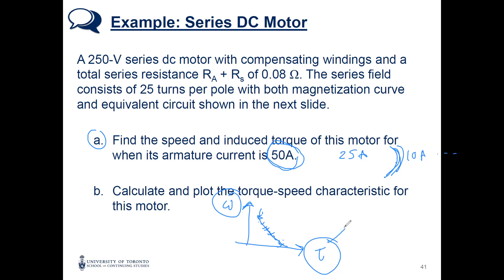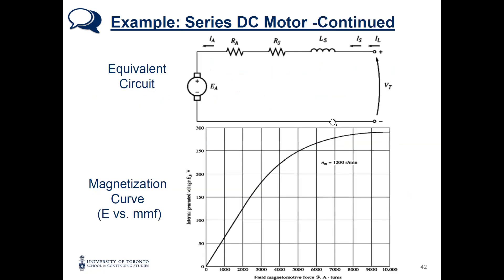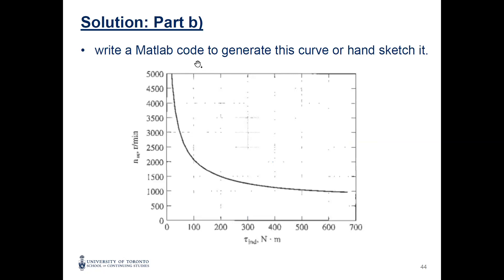Part B asks us to calculate and plot the torque-speed characteristic for this series DC motor. The series motor's curve is not linear. To get multiple points, you repeat Part A at different currents — say 25 A and 10 A — getting different torque and speed values each time. In the exam, plotting exact points hasn't been asked; they usually ask for a sketch. This textbook problem uses MATLAB to generate the curve with many points.